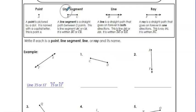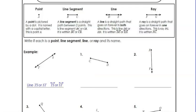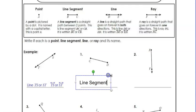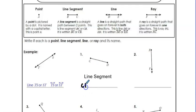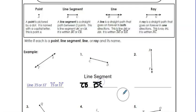Let's do number one together. You'll notice it matches a line segment from the examples up top — a line segment has two endpoints. It starts here and ends here, so this is going to be a line segment. Then it also wants its name. One way to name it would be CD, with a line segment symbol above it. You could also go backwards — DC with the symbol above it — or you could type out 'line segment CD' or 'line segment DC.' Either one works.